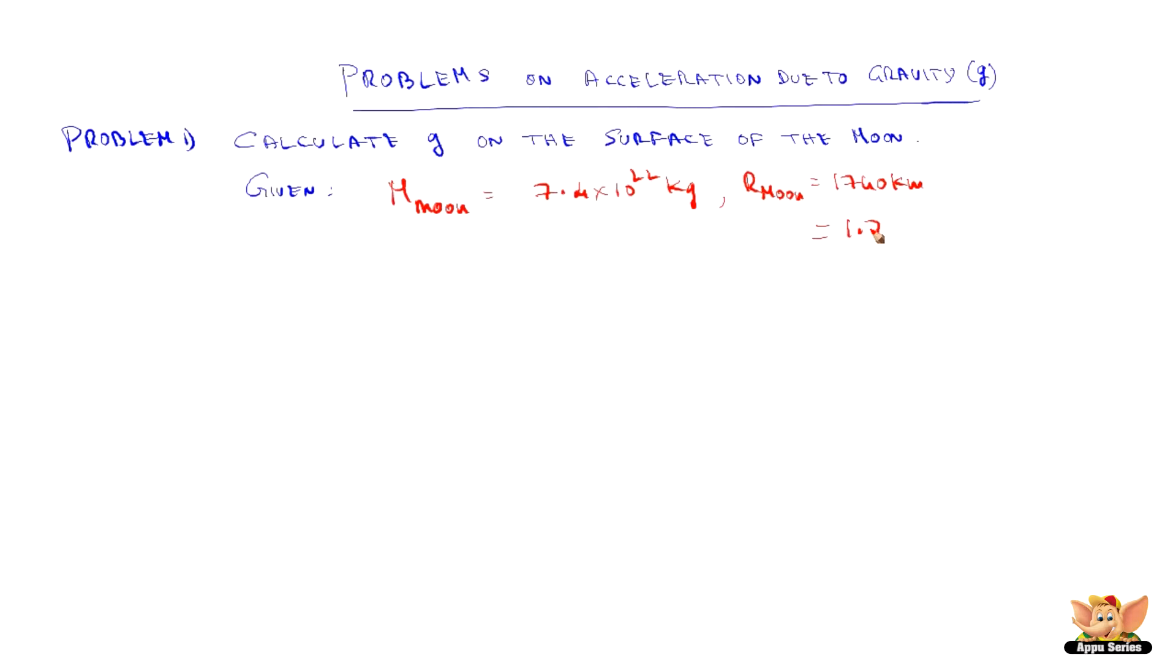1.740 into 10 cube into 10 cube, and we do have gravitational constant G is 6.7 into 10 to the power minus 11 Newton meter square kg minus 2.